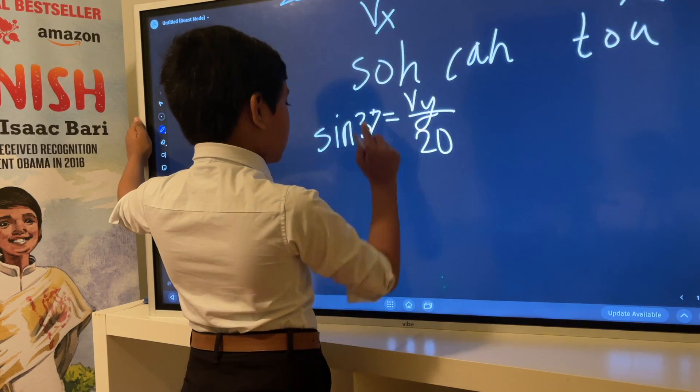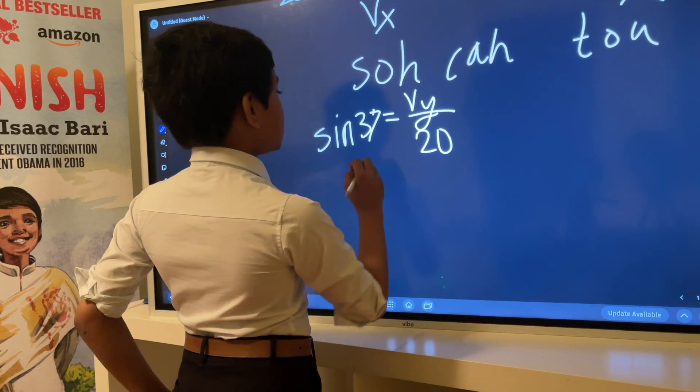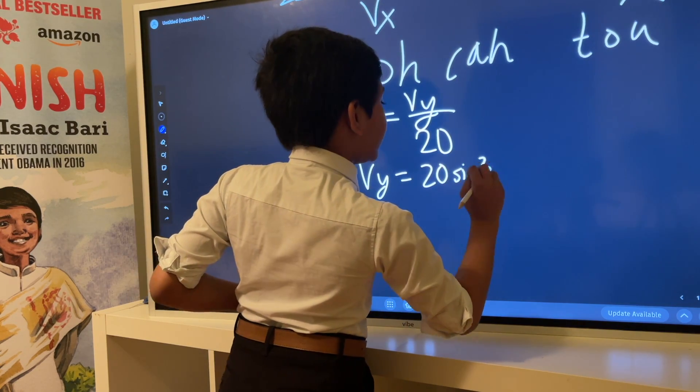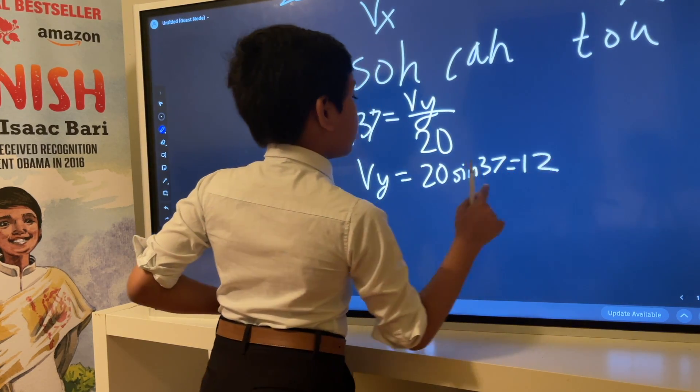We multiply both sides by 20 and we get v_y is 20 sine 37, which is approximately 12 meters per second.